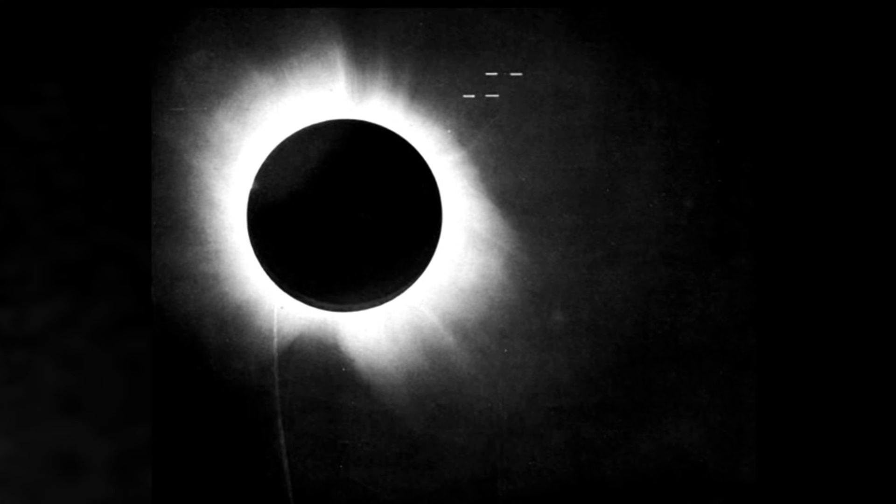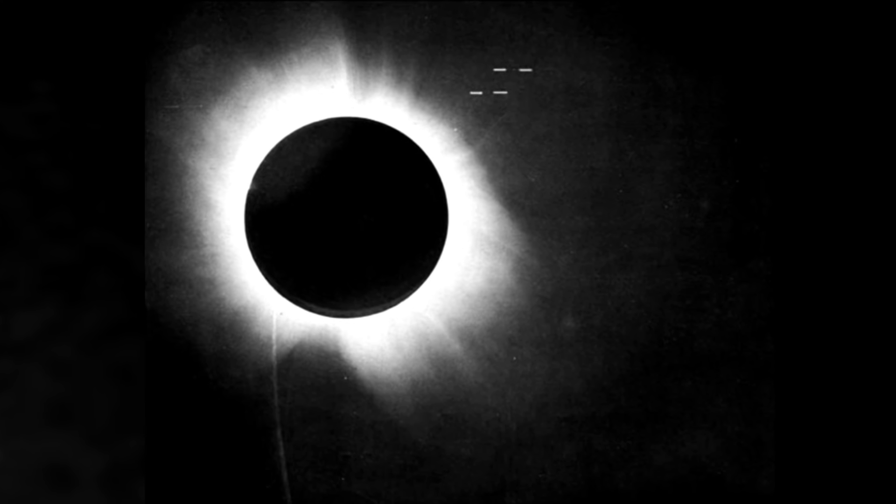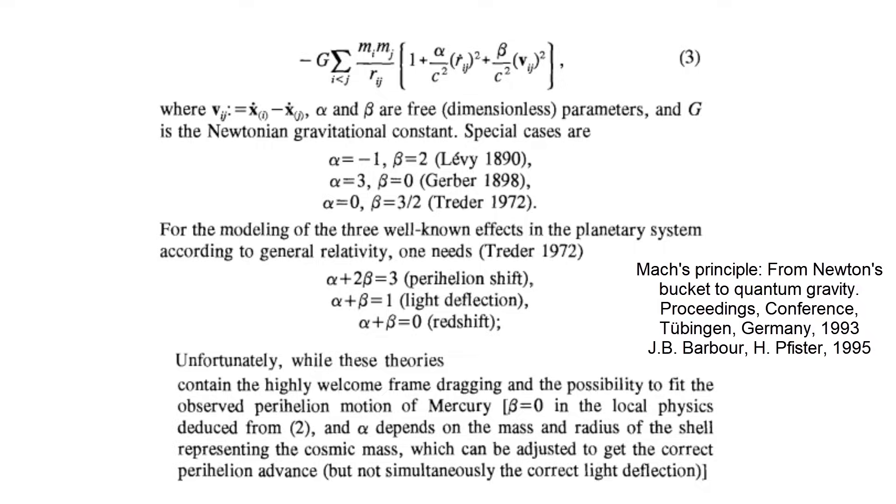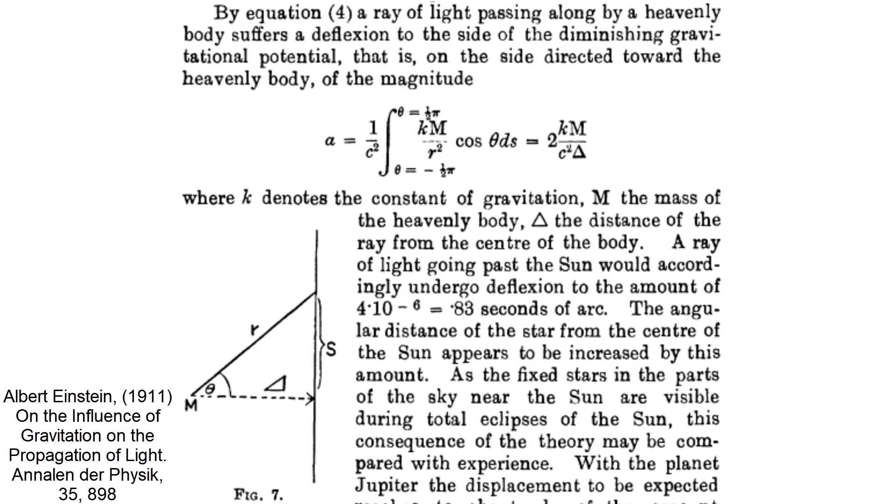Another example in which Newtonian gravity fails to reproduce observations in the solar system is the light bending of the Sun. One can also get the light deflection correctly by tweaking the linear general relativity approximation, but cannot get also redshift and Mercury's perihelion shift correctly with it.